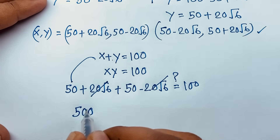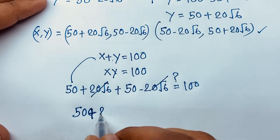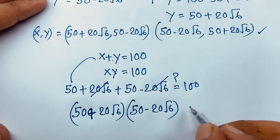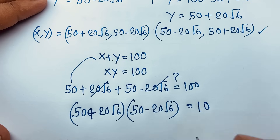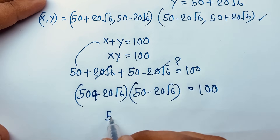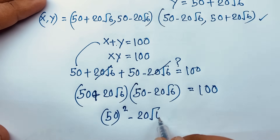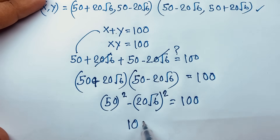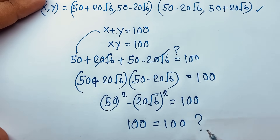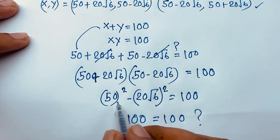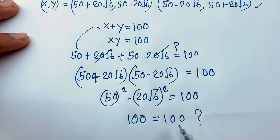Now checking xy: (50 plus 20 square root of 6) times (50 minus 20 square root of 6). This is in the form (a plus b)(a minus b) equals a squared minus b squared, so it equals 50 squared minus (20 square root of 6) squared, which is 2500 minus 2400, equals 100. Left-hand side equals right-hand side. This is our final answer. Thank you all — if you enjoyed this video please subscribe to my channel. Goodbye!